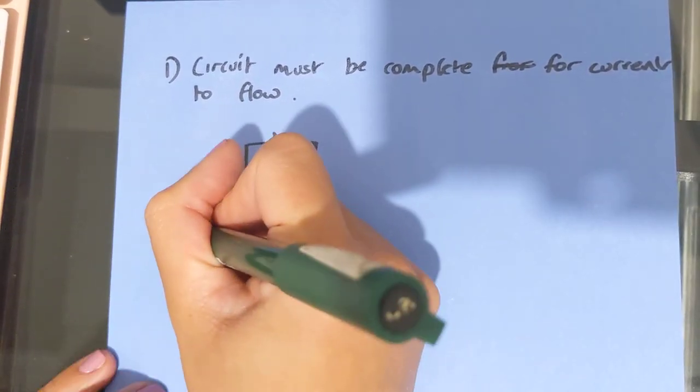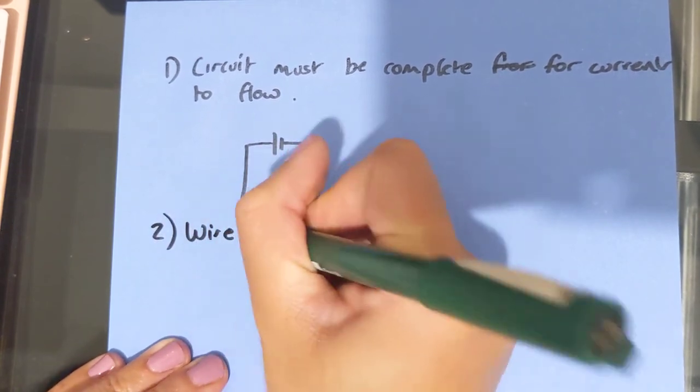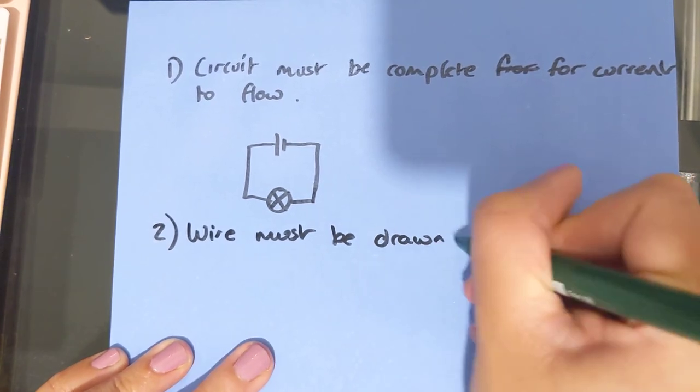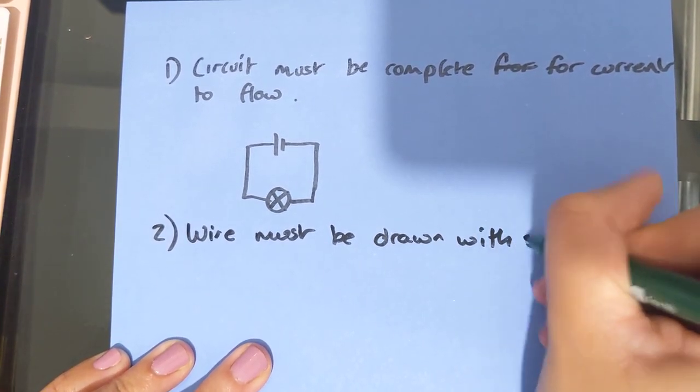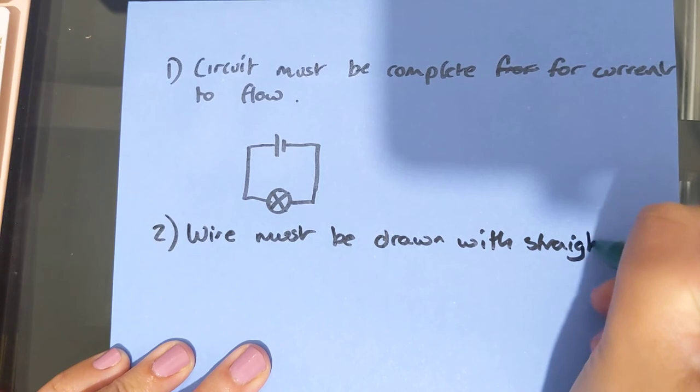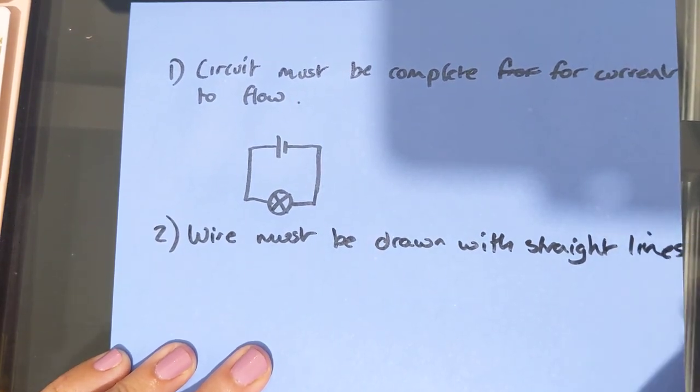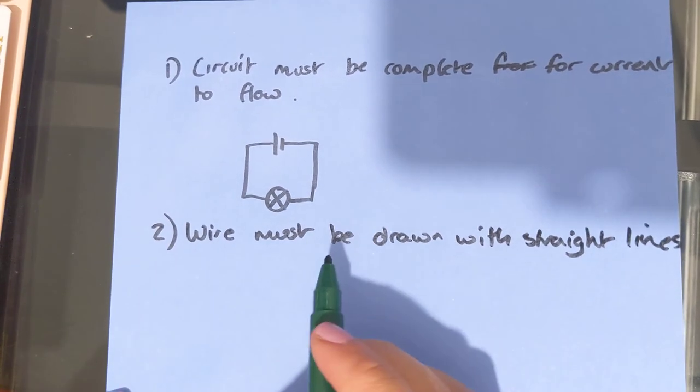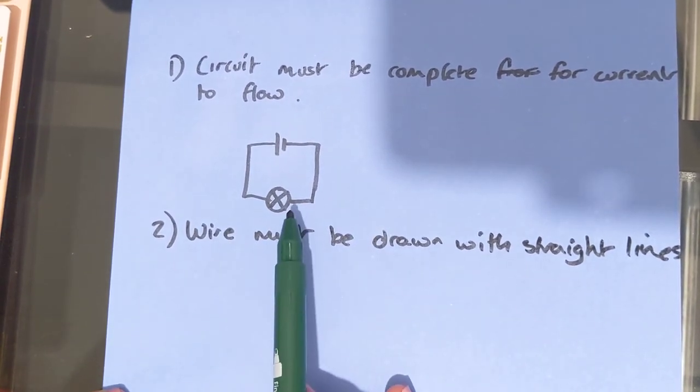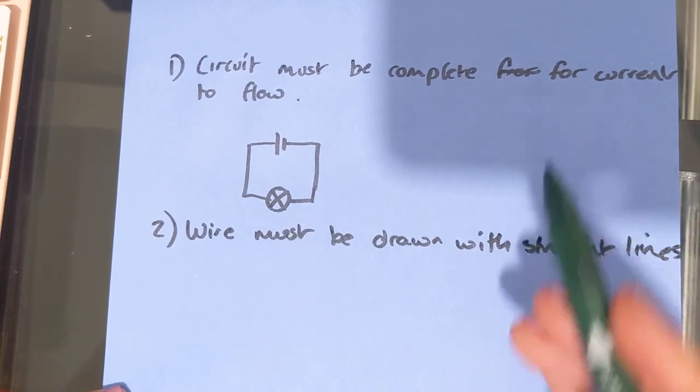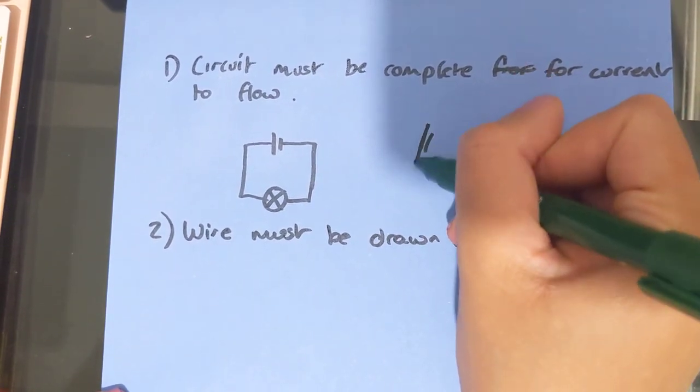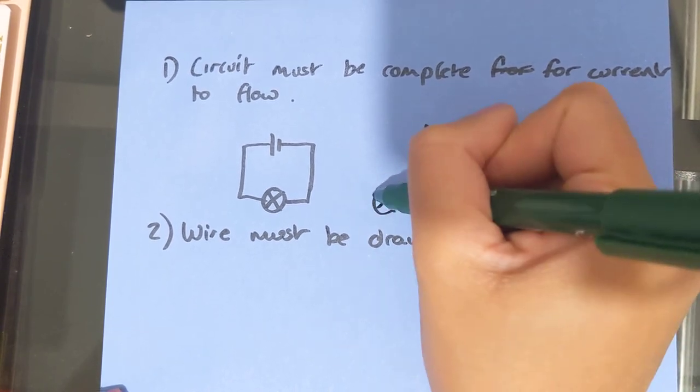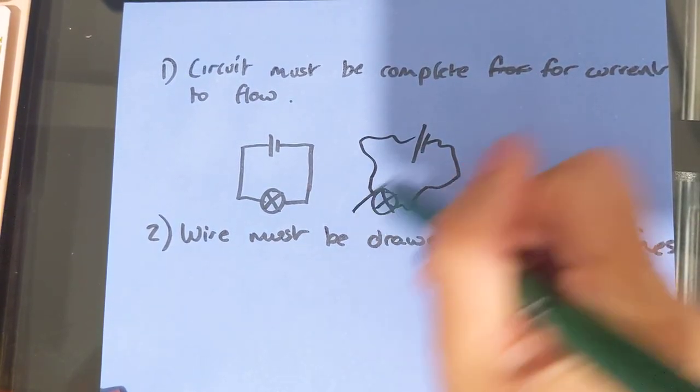Secondly, wires must be drawn with straight lines. Now, if I was going to be really pedantic, I would be using a ruler to draw all of my circuit diagrams. For the purpose of an exam, this is fine. What we don't want is just like, we don't want it to look like real life with just some symbols thrown in. That is wrong.